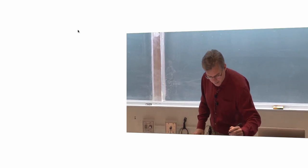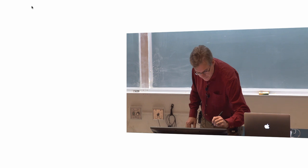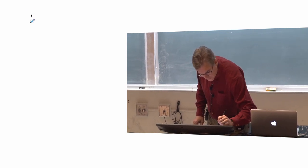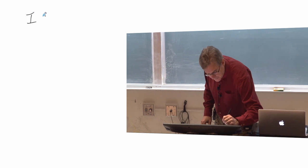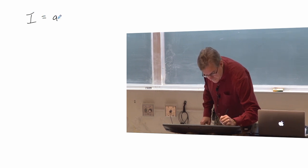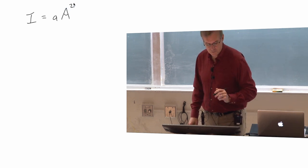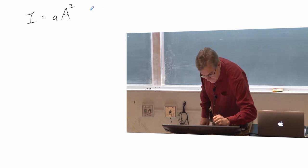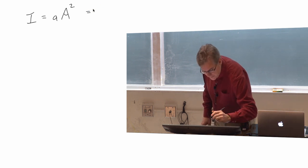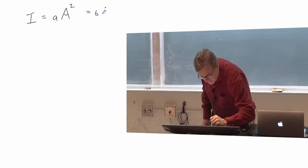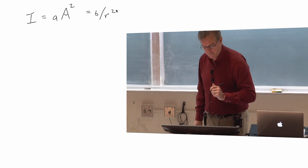We could say that explicitly the intensity is equal to some constant, let's say A, times the amplitude squared, and A is just some constant number. And we also have that the intensity is equal to some other constant B, divided by R squared, right?